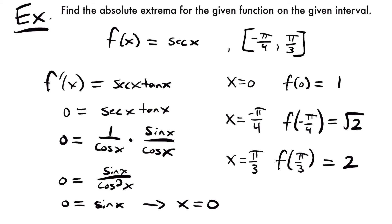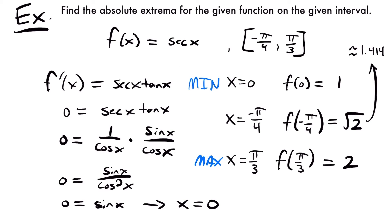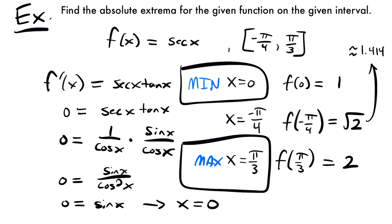Now we compare these y values to find the minimum and maximum. The square root of 2 is approximately 1.414, so 2 is the greatest value, making x equals pi over 3 our maximum. And 1 is less than root 2, making x equals 0 our absolute minimum. Our absolute maximum is at x equals pi over 3, or the point (pi over 3, 2), and our absolute minimum is at x equals 0, or the point (0, 1).